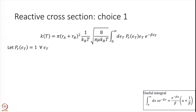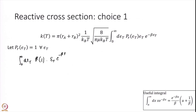First, let me convince you that if we choose P_r to be simply 1, we should get the old result back from the last module. Assuming P_r(ε) equals 1 for all ε, we solve this integral. Using the standard integral with a equal to 0: e to the power of minus β·0 is 1, so we get 1/β times (0 + 1/β), which is 1/β², which is nothing but K_BT².